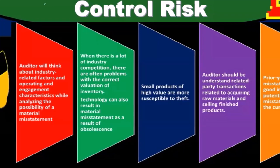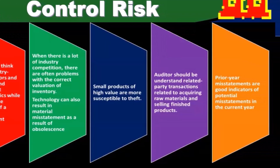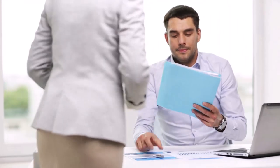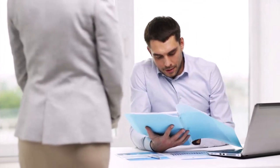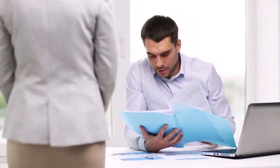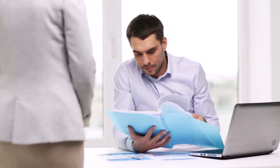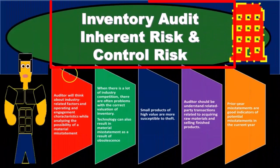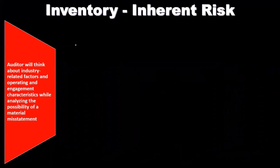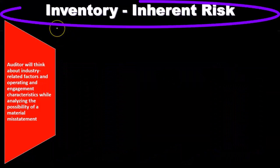Remember that the inherent risk and control risk are essentially outside of the auditor's control — those are things that are managed or decided on by the company. We are going to take those risks and determine the detection risk, which is what we do have control over through the amount of testing that we will do. So we have to consider inherent risk and control risk, then consider them in relation to detection risk.